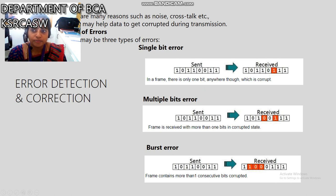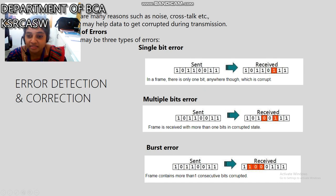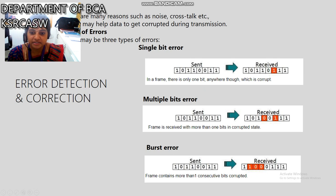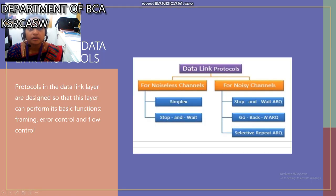A single bit error means among many zeros and ones, a zero is sent but the received message shows a one — that is an example of a single bit error. Multiple bit errors means more than one bit or number is corrupted. A burst error means more than one consecutive bit is corrupted.